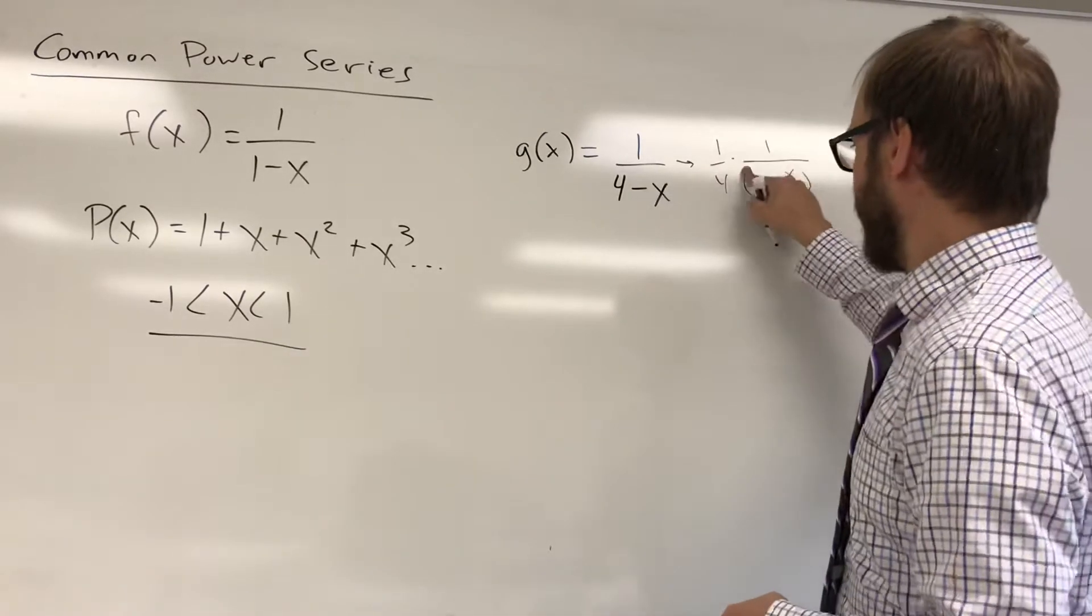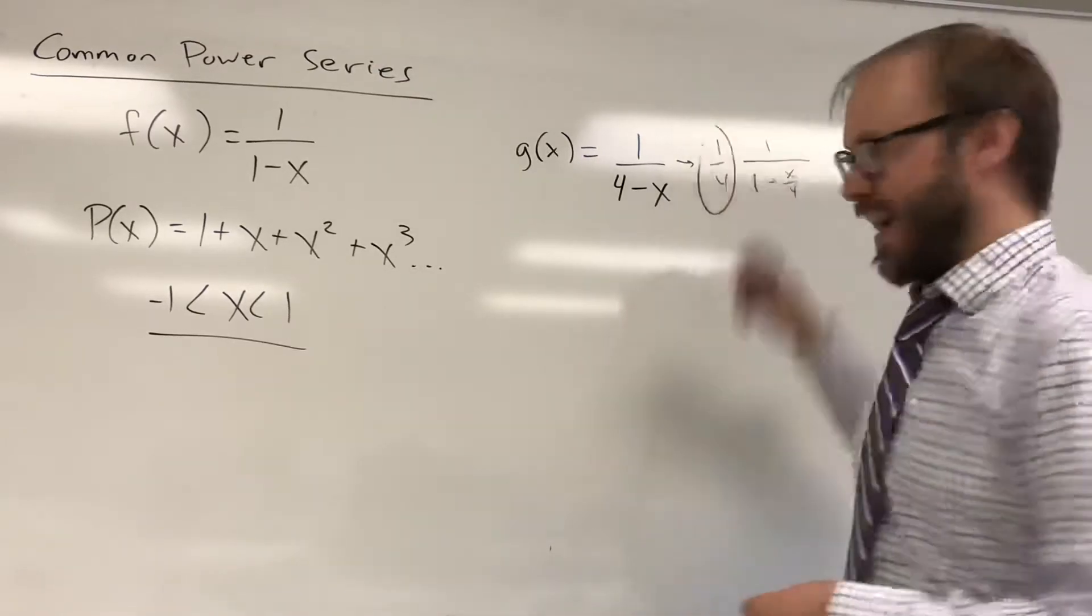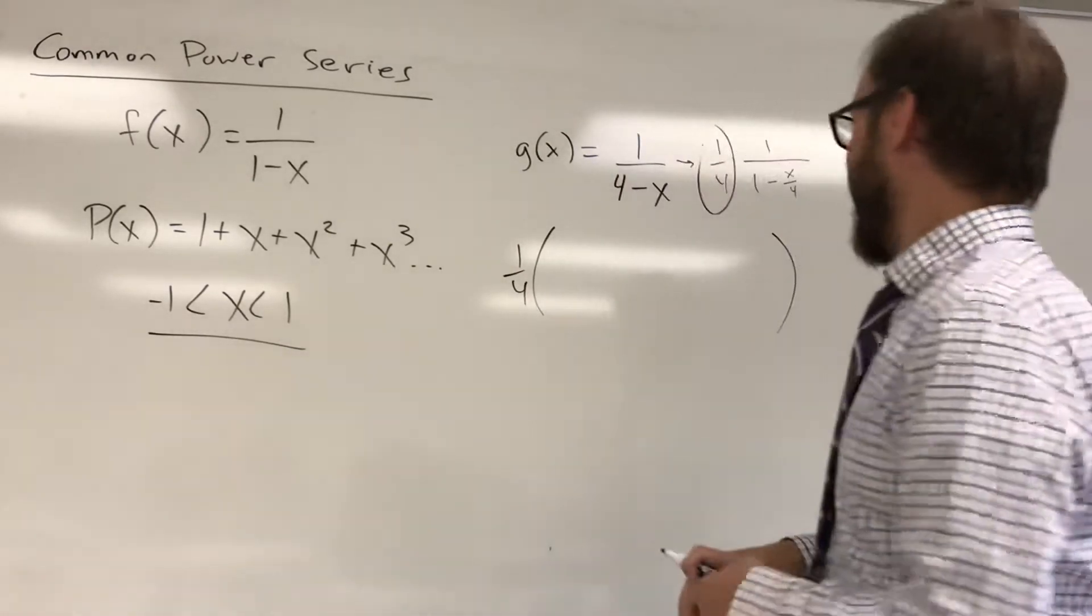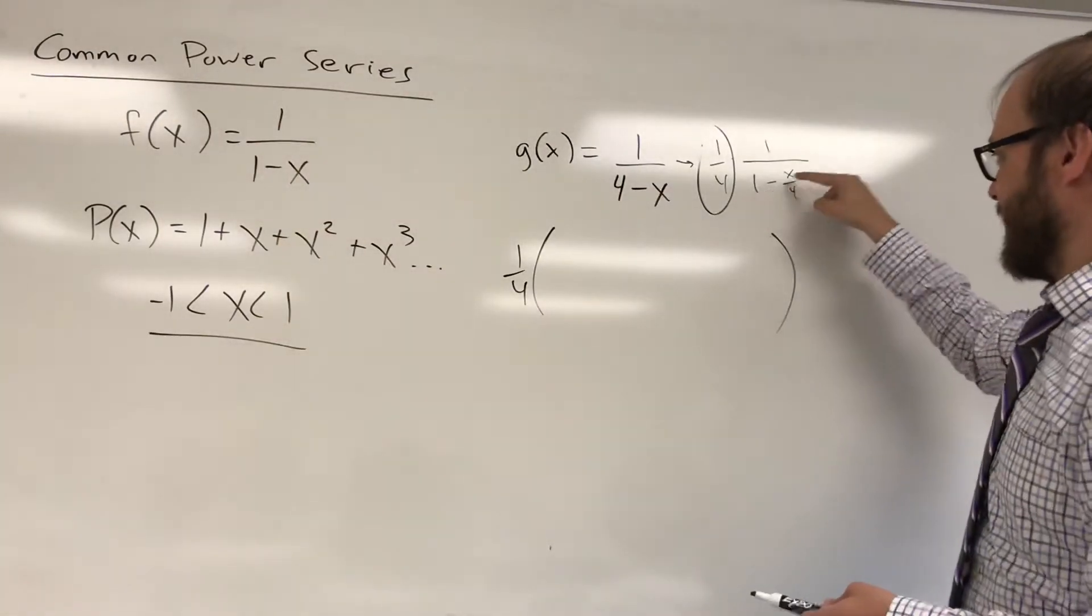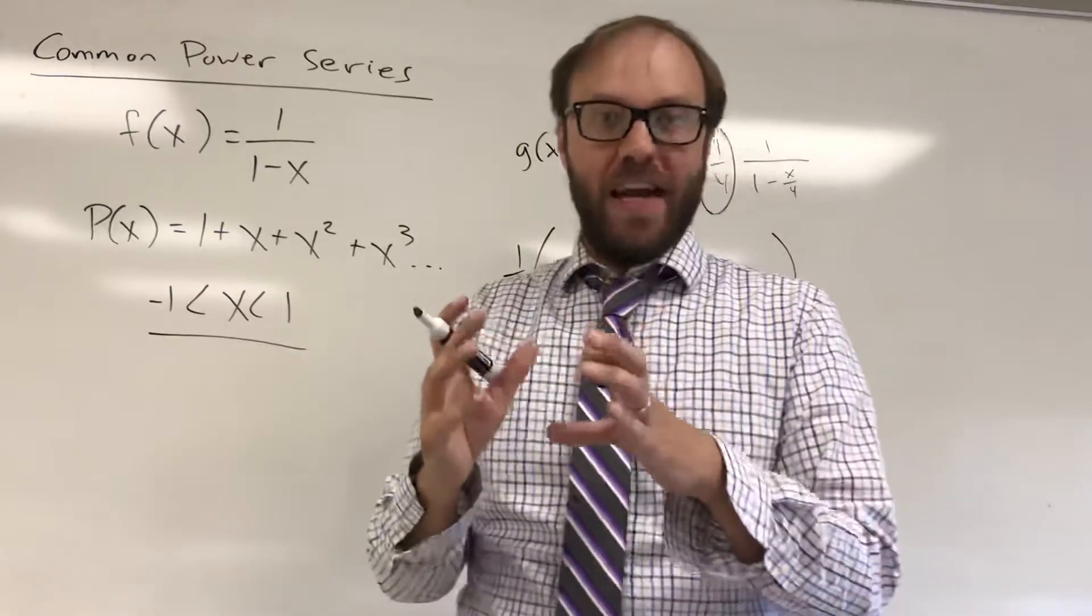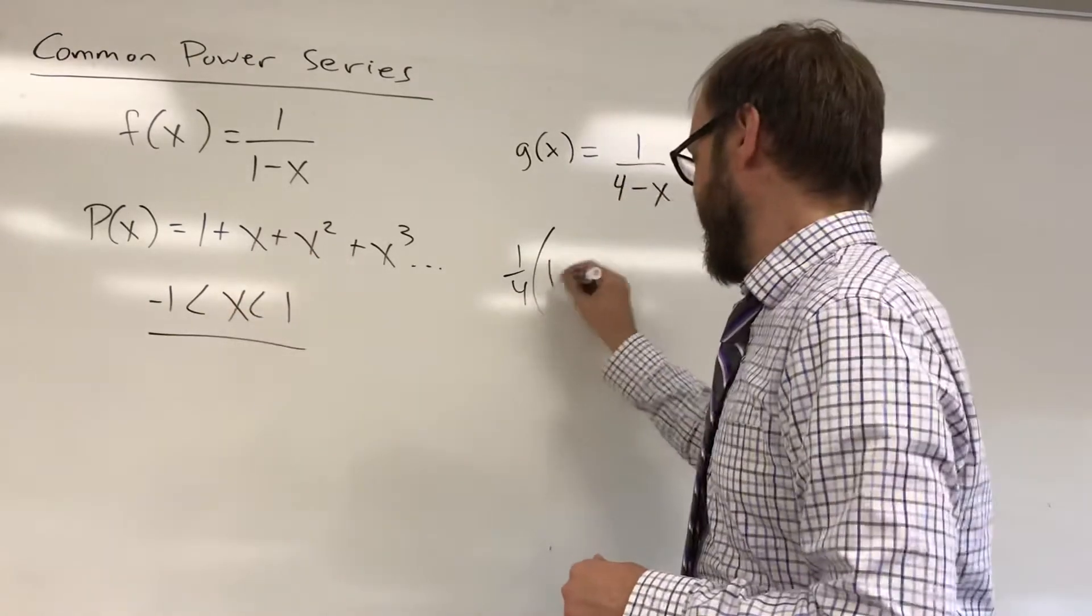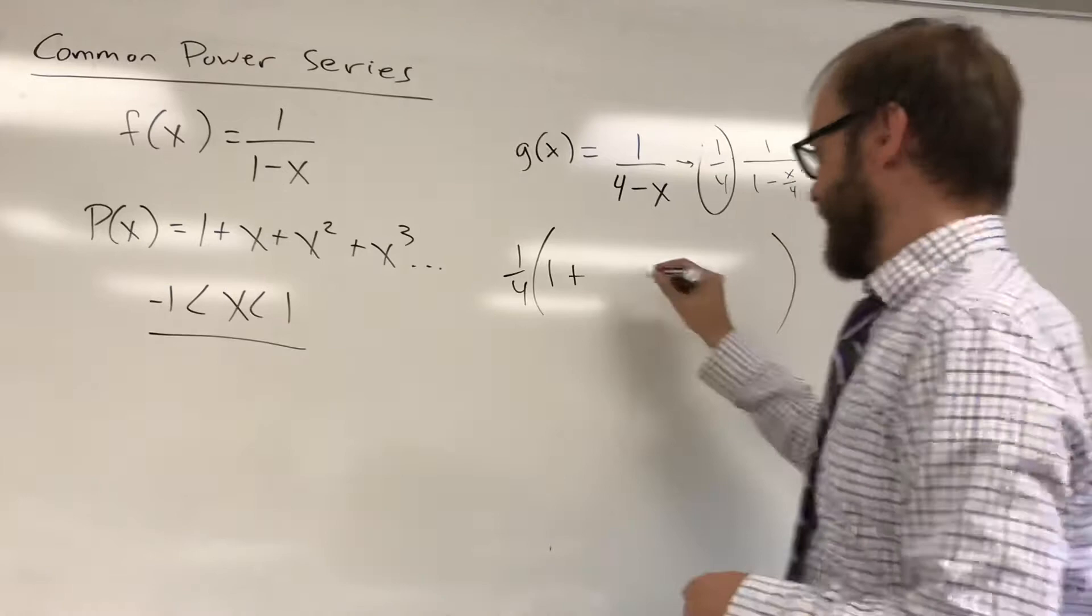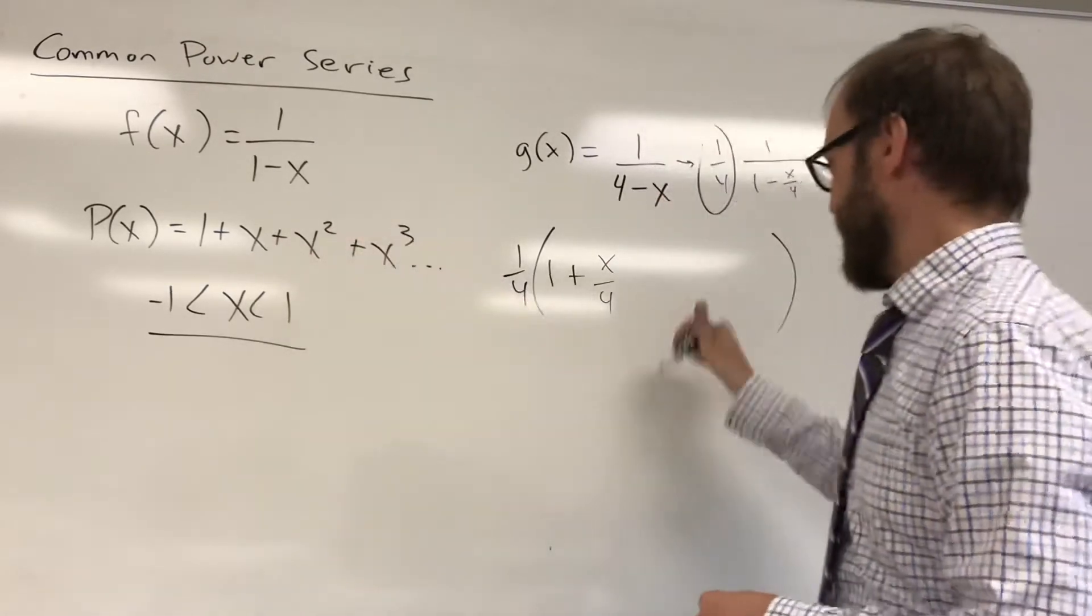So we're going to write this as 1 fourth times 1 over 1 minus x to the fourth. So you've got a constant out in front. And notice, it's 1 over 1 minus an input. 1 over 1 minus x over 4. x over 4 is going to end up being your new input. So your series normally would be 1 plus the input. The input is changing to x over 4. Plus the input squared.